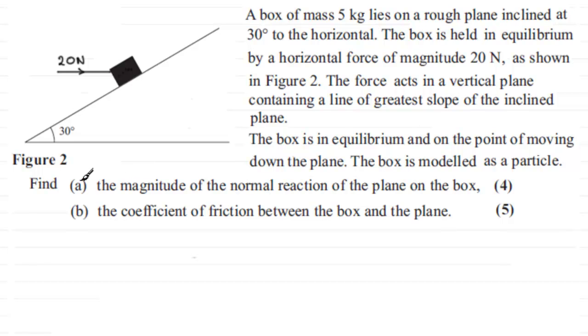what we've got to find in part A is the magnitude of the normal reaction of the plane on the box. And in part B the coefficient of friction between the box and the plane.